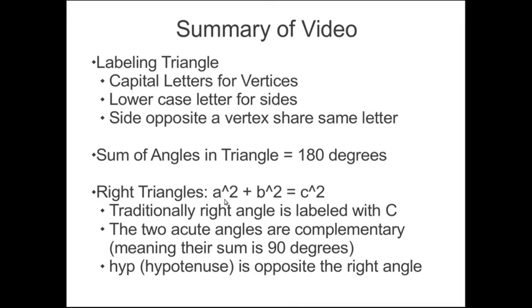For right triangles, some special things happen. A squared plus B squared is equal to C squared. We call that the Pythagorean theorem. Traditionally, the right angle is labeled C, so that the C squared that we're talking about is the length of the hypotenuse. So the length of one of the legs squared plus the length of another leg squared is equal to the hypotenuse squared. The two acute angles in a right triangle are complementary. That means that their sum is 90 degrees. And the hypotenuse is always the side that is opposite the right angle.